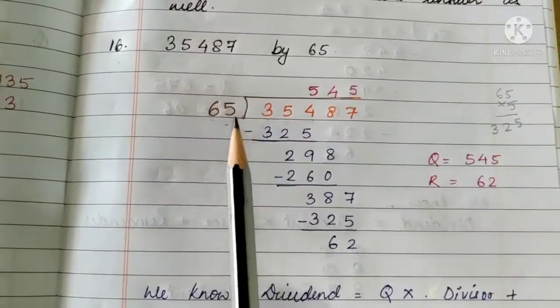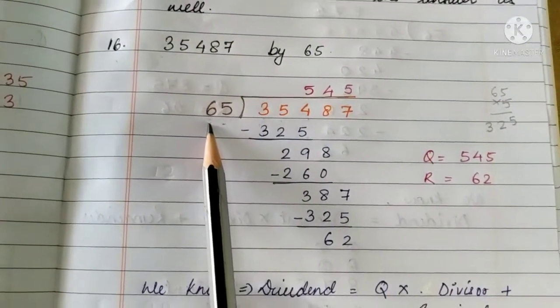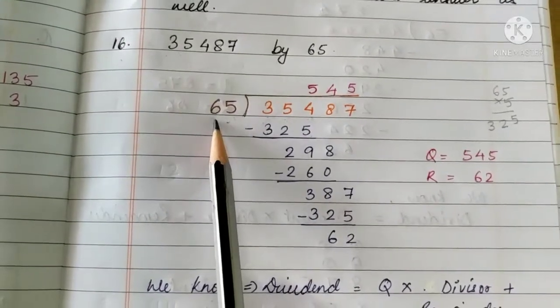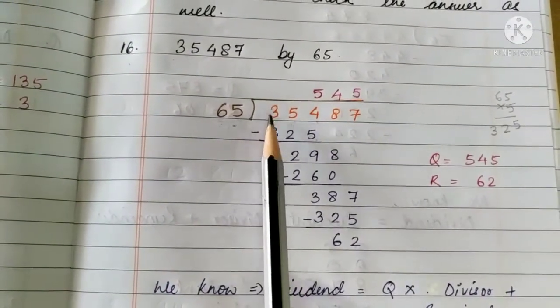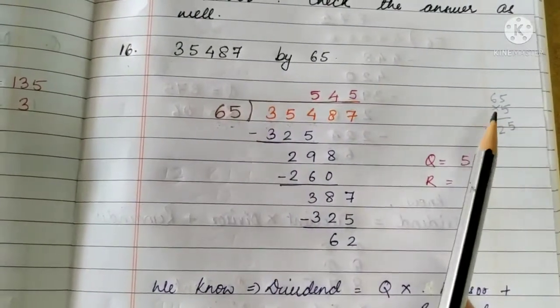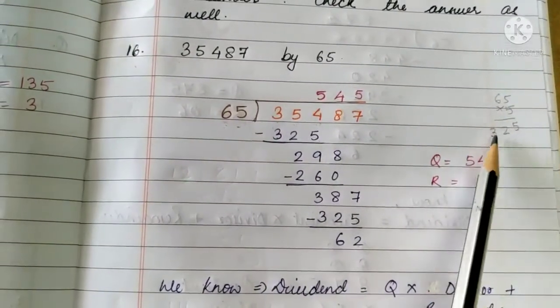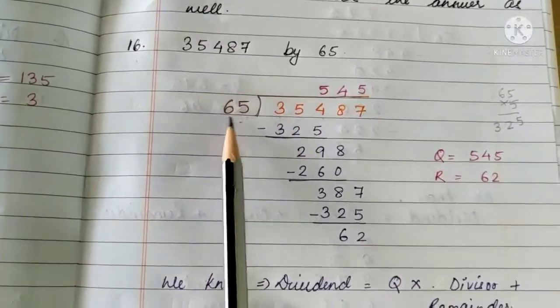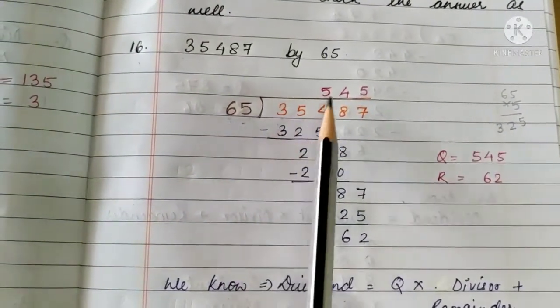So, here we have got 5. That is, 65 fives are 325. So, 65 goes into 354 five times.